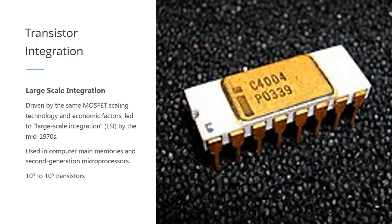In the 1970s, with the advent of the microprocessor, technology advanced enough to fit around 1,000 to 100,000 transistors in a single package. This is what we call large-scale integration, usually using MOSFET or metal-oxide-silicon field-effect transistors. This was used to create early computer memories and first and second generation microprocessors.